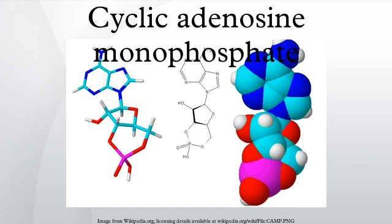Liver adenylyl cyclase responds more strongly to glucagon, and muscle adenylyl cyclase responds more strongly to adrenaline. cAMP decomposition into AMP is catalyzed by the enzyme phosphodiesterase.